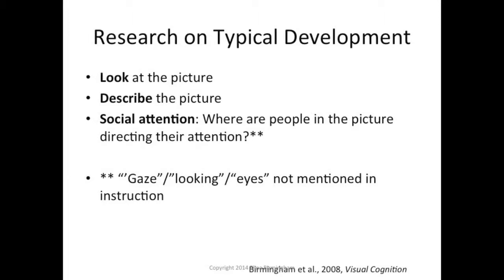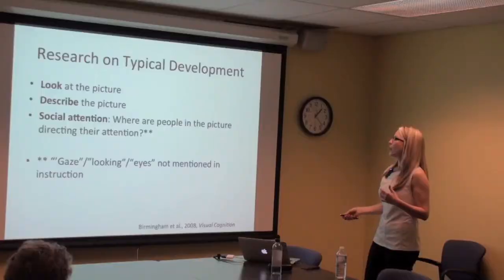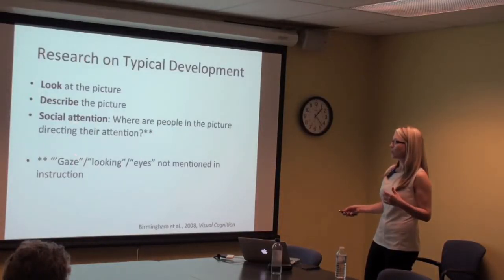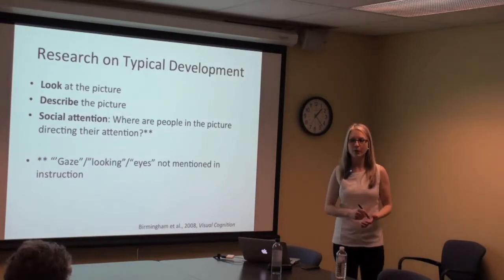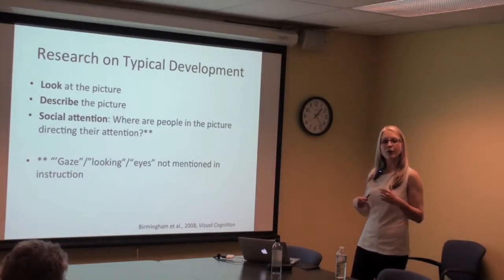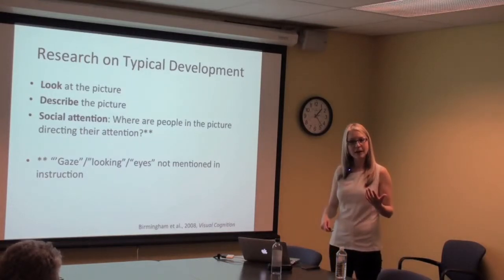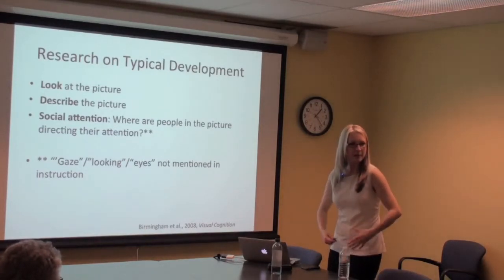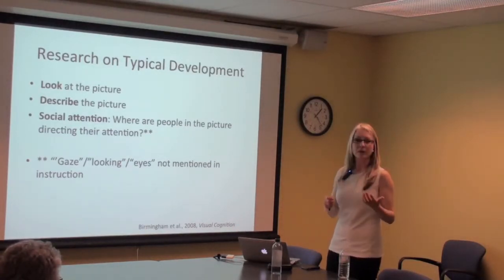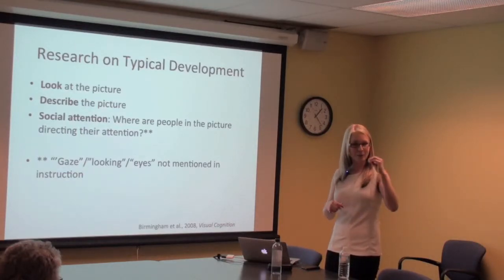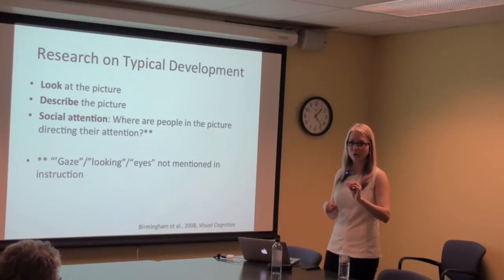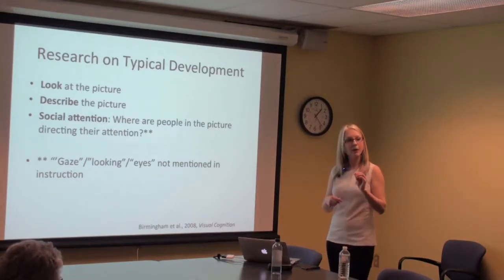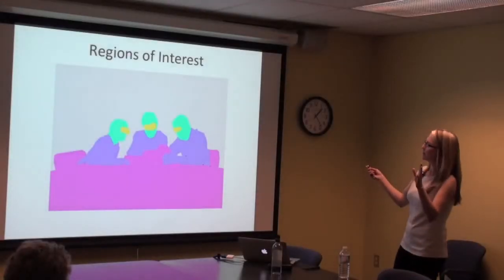I had three tasks. One was to just look at the picture. Another was to describe it. The third — the critical one — was a social attention task: where are people in the picture directing their attention, and how do you know? Importantly, there was no mention of looking, eyes, or eye gaze in the instructions. There are a variety of cues people can use — what they're doing, their posture, and so on. We wanted to know if they automatically increase their interest in the eyes as a cue for social attention.